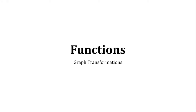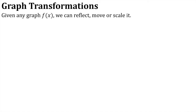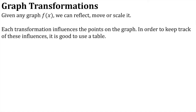In this video we're going to look at single graph transformations. Given any graph f of x, we can reflect, move or scale it. Each transformation influences the points on the graph, and in order to keep track of these influences, it's good to use a table — that's what you'll see throughout this video. We'll firstly look at vertical transformations, investigate each graph, and then I'll give you an example for each one.